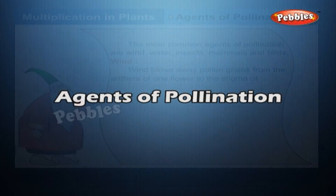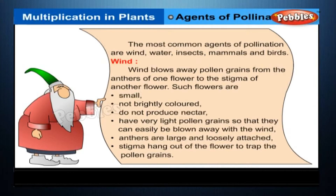Agents of pollination: the most common agents of pollination are wind, water, insects, mammals and birds. Wind blows pollen grains from the anthers of one flower to the stigma of another flower. Such flowers are small, not brightly coloured, do not produce nectar, and have very light pollen grains that can easily be blown away. Anthers are large and loosely attached, and stigmas hang out of the flowers to trap the pollen grains.